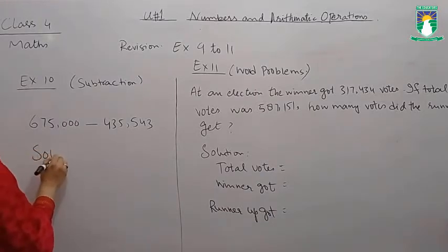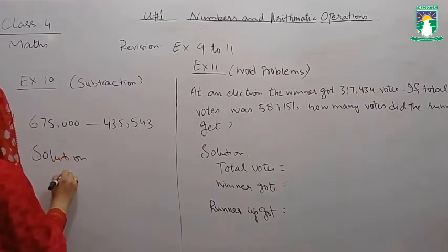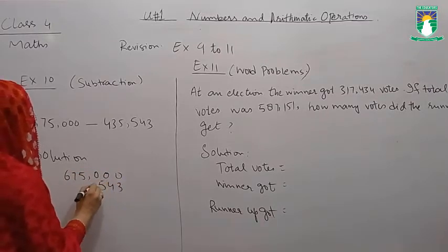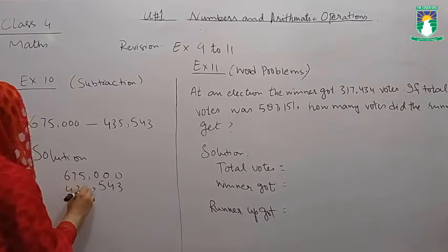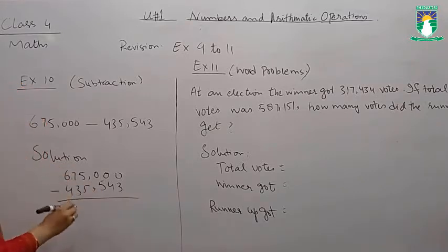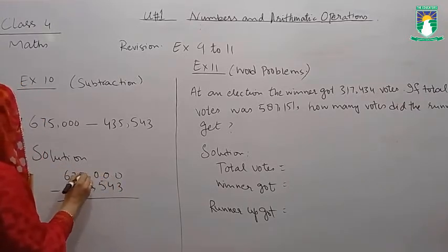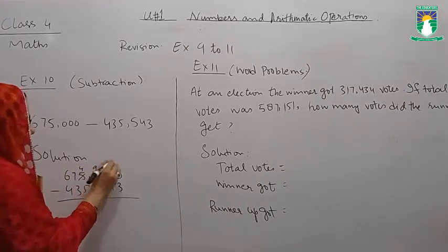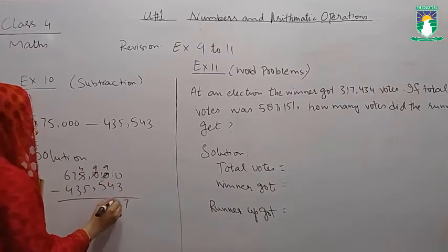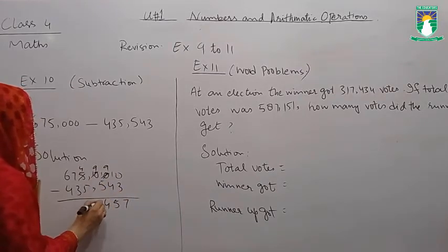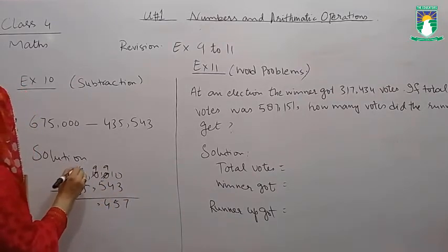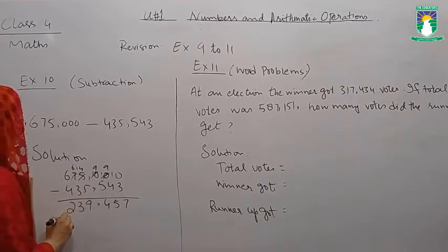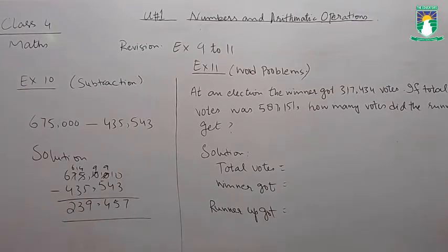First of all, we are going to write the value: 675,000. And now we are going to subtract them normally. We are going to write the value of this as we are going to write down the value of this: 57.